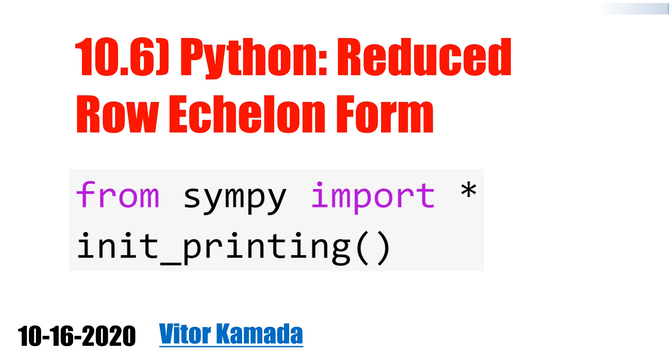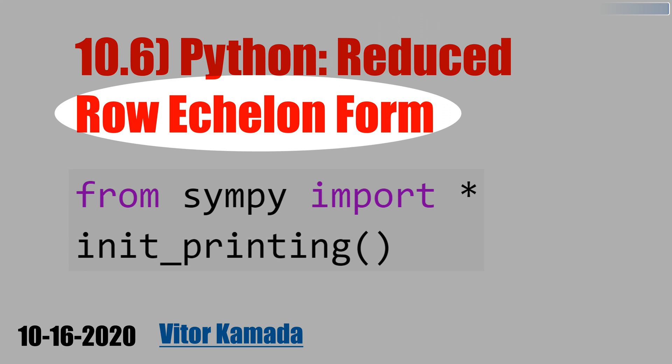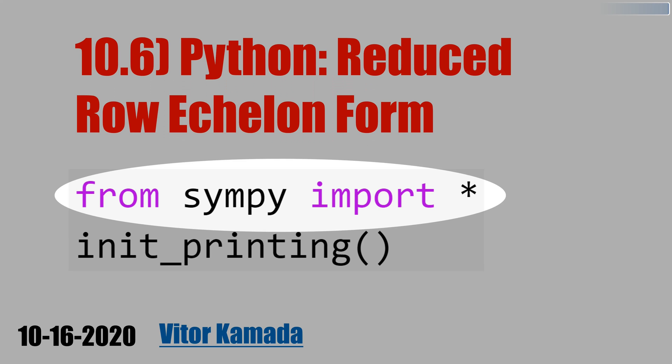In this video, let's learn how to get the reduced row echelon form in Python. We need a library to do the symbolic math from SymPy import star, and we want a nice layout for printing.